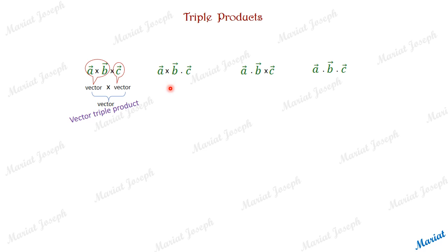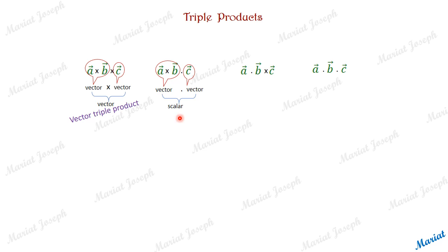Now the second case: A cross B gives a vector first, and then we dot it with C, which is also a vector. The dot product between a vector and a vector is a scalar. So the ultimate result will be a scalar. It is called the scalar triple product.